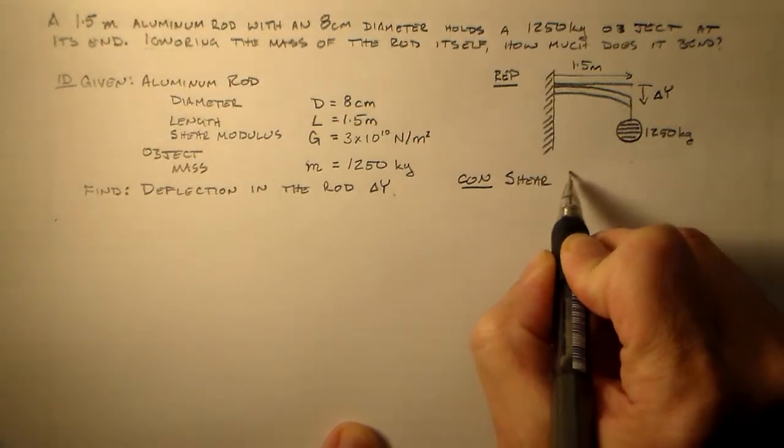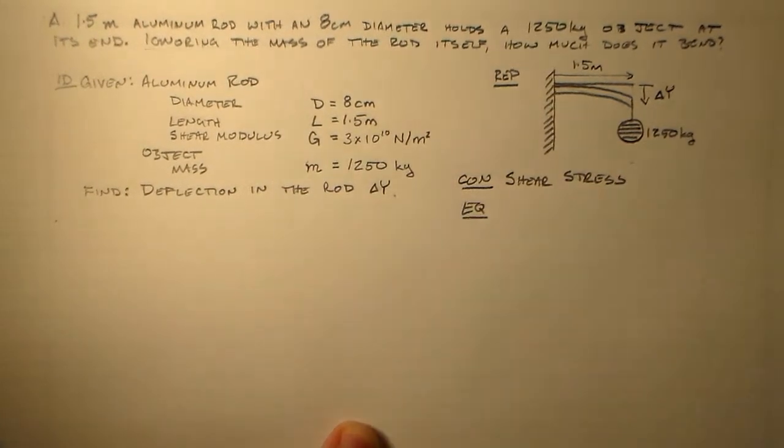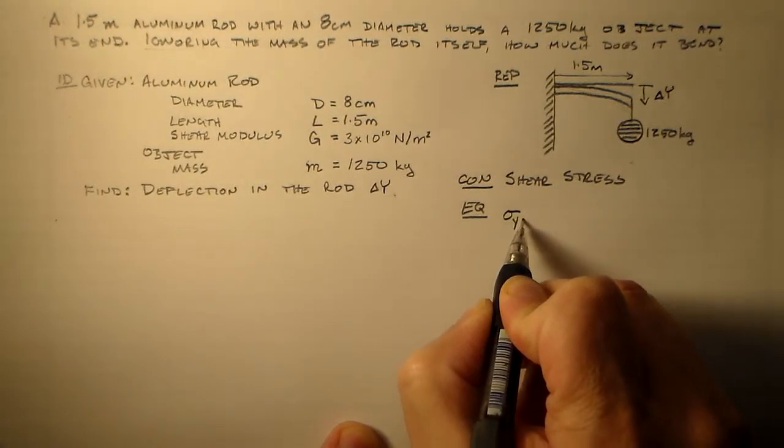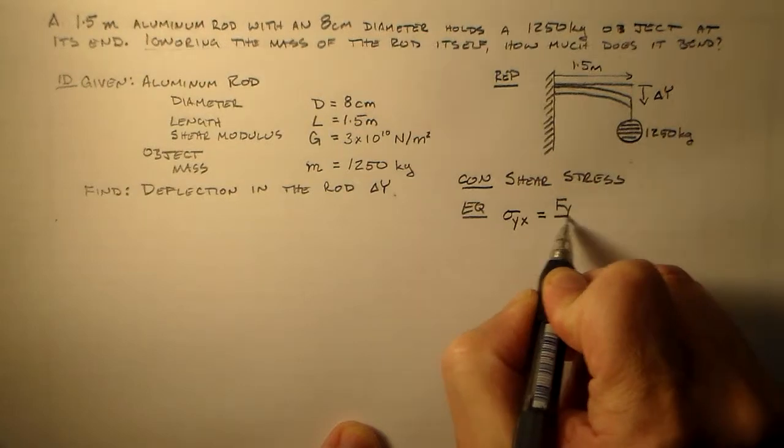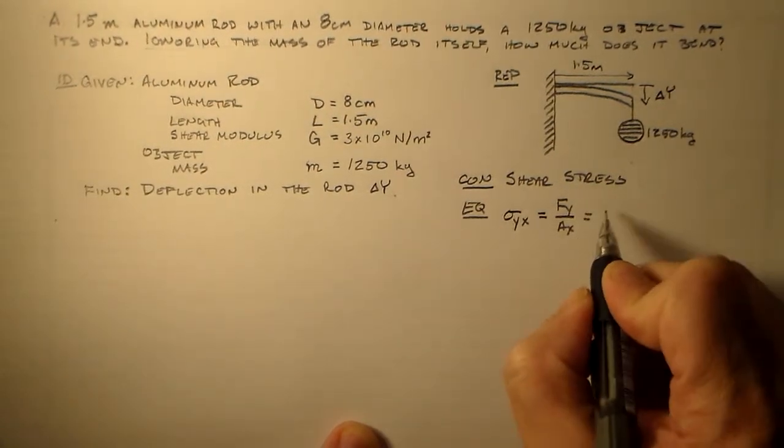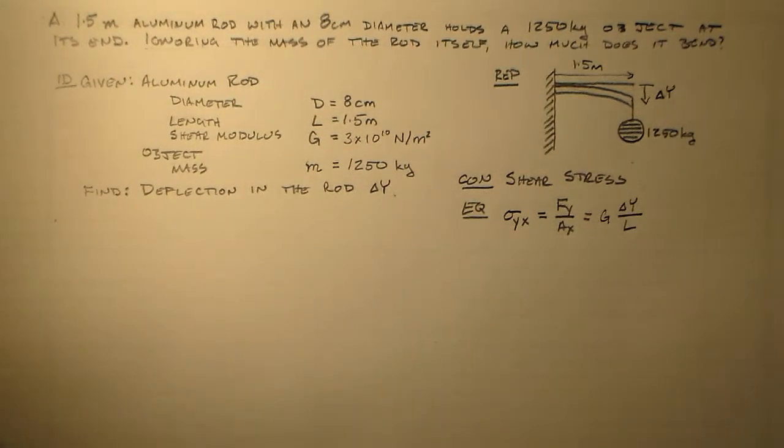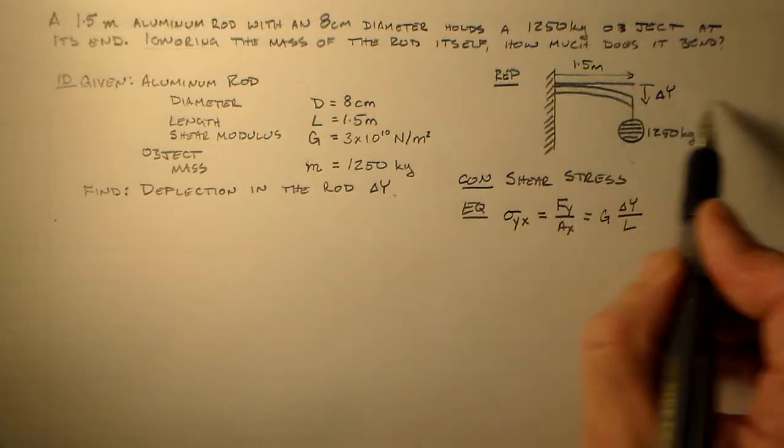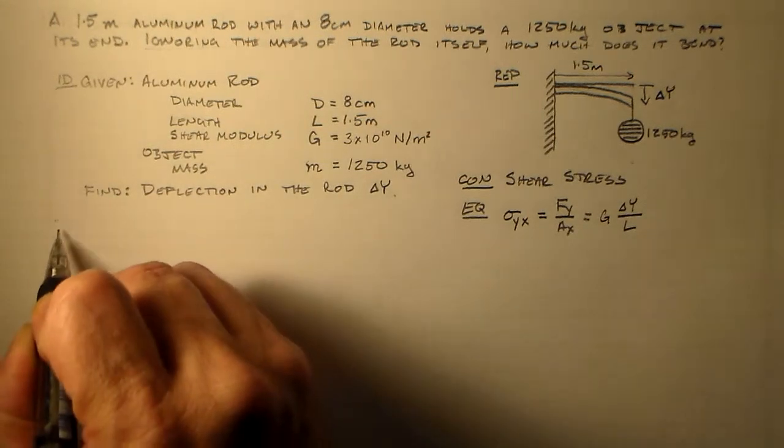I'll call that delta Y up here. I'll call it delta Y down here. And I just went through that spiel about keeping notation the same. This is the notation deflection in the rod, so we'll use a capital Y to make everybody happy. So what do I need? I need a concept. I said we're probably going to use the shear modulus, so we're going to use shear stress.